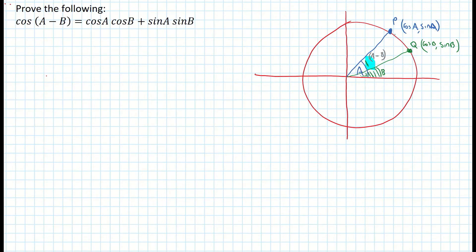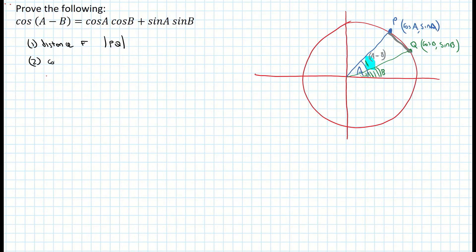I'm going to draw a straight line from P to Q and use that in answering my question. For my proof I'm going to do two things: I'm going to use my distance formula to get the distance from P to Q, and I'm going to use my cosine rule to get that same length PQ. When I get both of those answers, because they're the same thing, I'm going to let my two answers equal each other. So that's the aim of the game here.